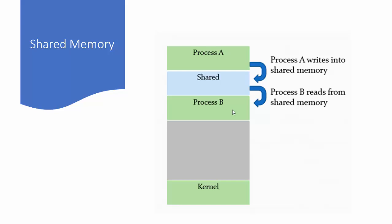In practice, whichever process wants to send the data will create a shared segment and will attach the shared segment to its address space. Once the shared segment is attached to the address space of the sender process, the sender can write data into the shared segment. Similarly, the receiver will first attach itself to the shared segment and then read data from it.